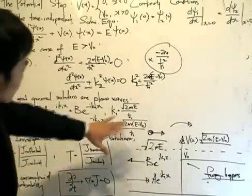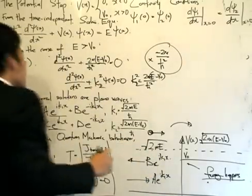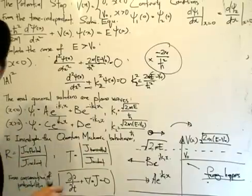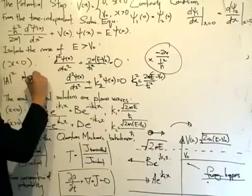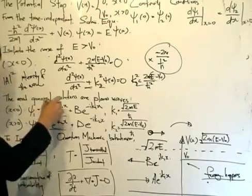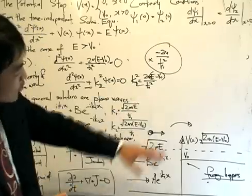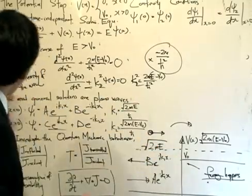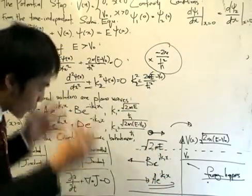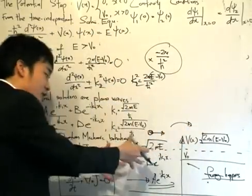We can also notice that A and B are coefficients of the functions e^(iKX). We can actually say that the magnitude of A squared is called the intensity of the respective wave. So e^(iK1X) represents the wave in the region x less than 0 moving from left to right, and the magnitude of A squared is basically the intensity of this wave. Similarly, the magnitude of B squared is the intensity of the wave moving from right to left in this region.